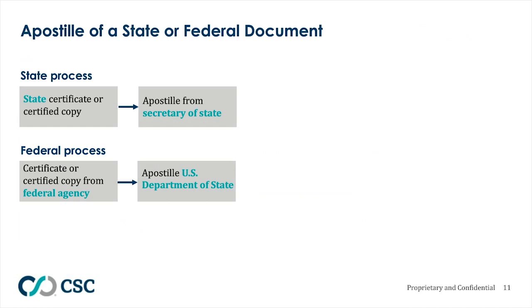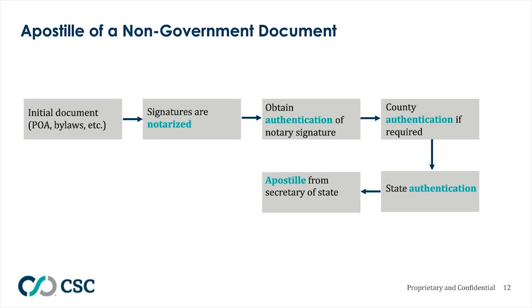The apostille process is much more streamlined than the legalization process. For a state document, you start with a state certificate or certified copy and receive the apostille from the Secretary of State. For a federal document, you start with a certificate or certified copy from a federal agency and receive the apostille from the U.S. Department of State. For an apostille of a non-government document, you start with a power of attorney or bylaws, signatures are notarized, you obtain authentication of the notary signature, obtain a county authentication if necessary, go through state authentication, and your final step is the apostille from the Secretary of State.